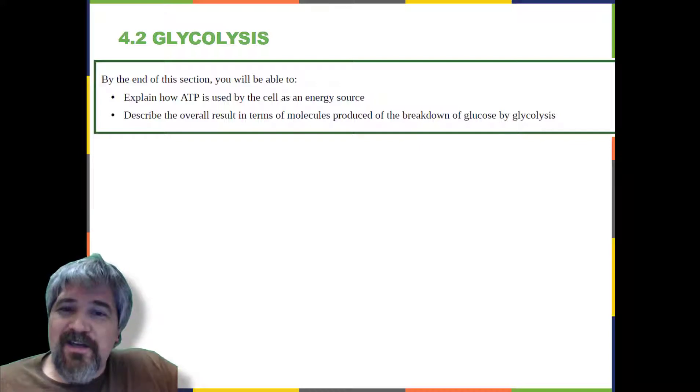Even exergonic energy-releasing reactions require a small amount of activation energy to proceed. However, consider endergonic reactions, which require much more energy input because their products have more free energy than their reactants. Within the cell, where does energy to power such reactions come from? The answer lies in an energy-supplying molecule called adenosine triphosphate, or ATP.